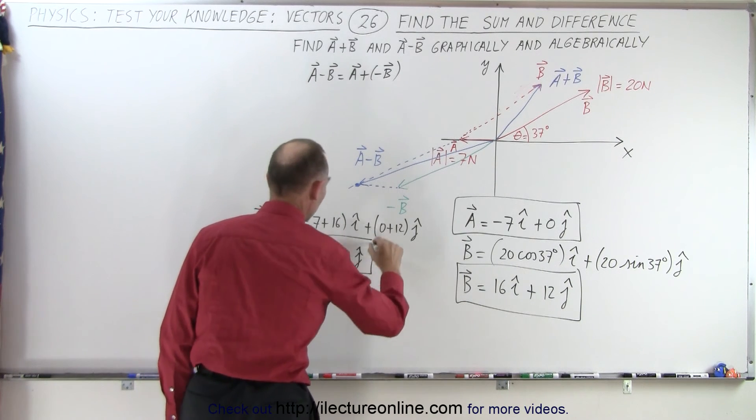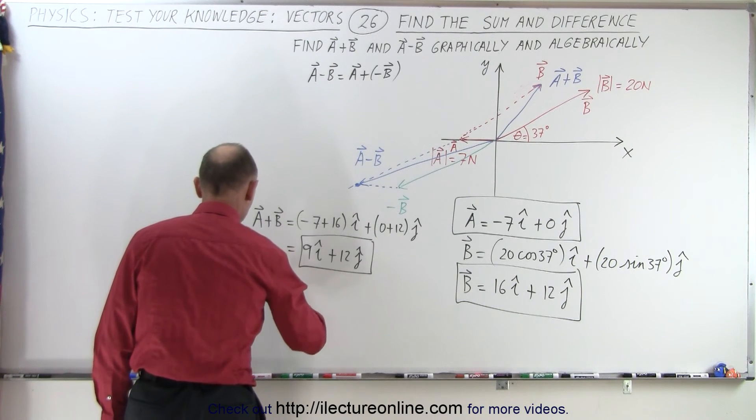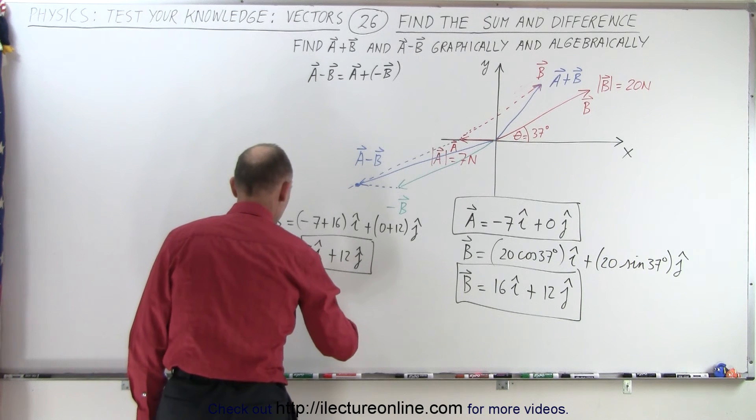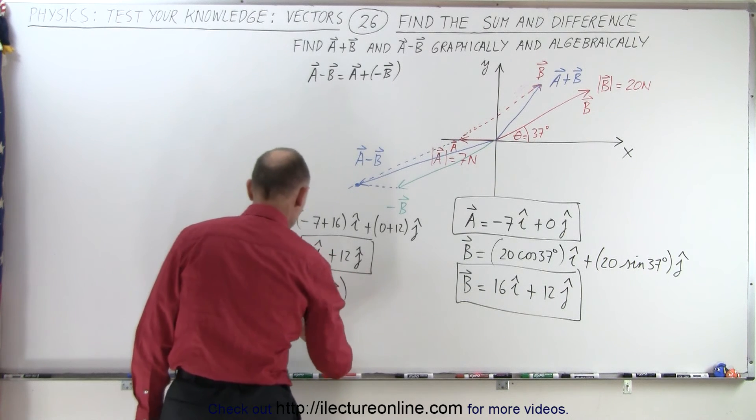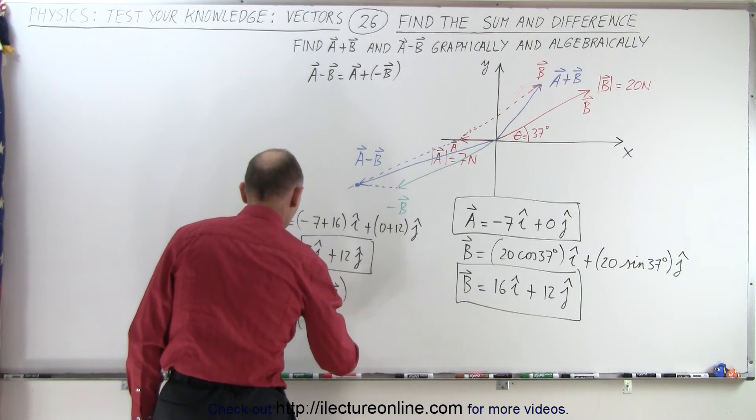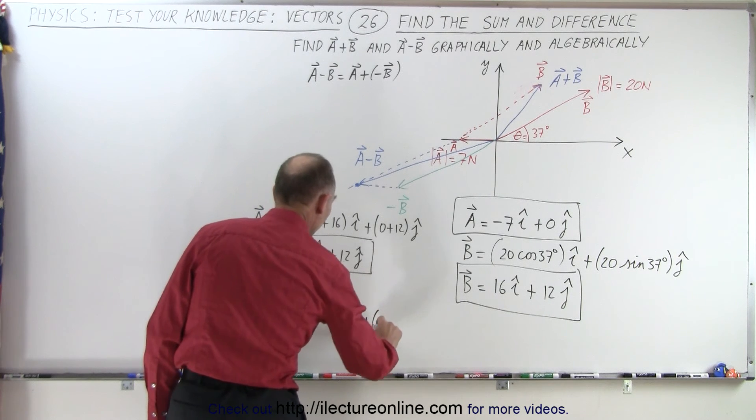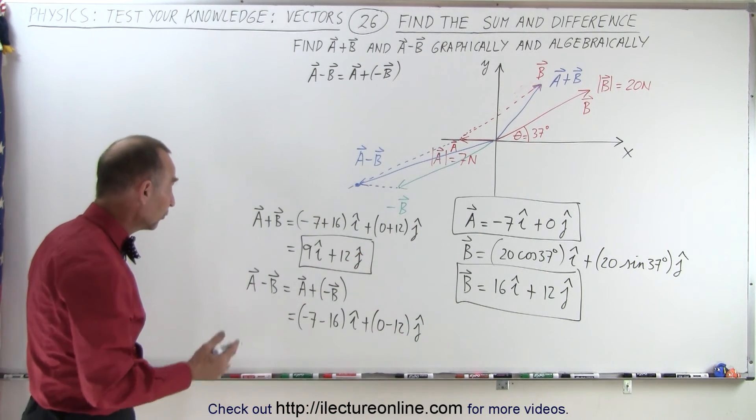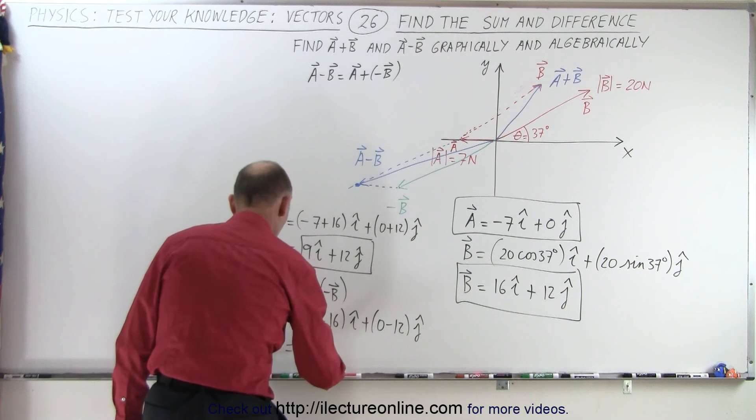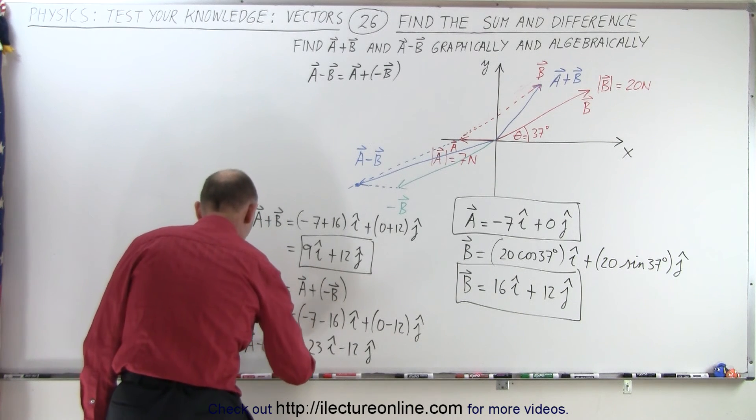So here are the two vectors with their X and Y components. Now if we're going to subtract B from A, we get A minus B, which is equal to A plus negative B. That would be equal to minus 7 minus 16 in the I direction, and that would be plus 0 minus 12 in the J direction. We simply change the sign of the two B components. And so that would be equal to minus 23 in the I direction and minus 12 in the J direction. That would be for A minus B.